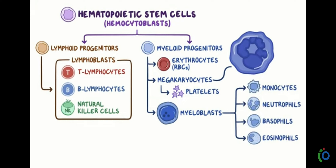Now we will discuss about the lymphoid progenitor. The lymphoid progenitor is related to the lymphatic system. In our body, various different systems carry different functions. The lymphatic system generates or forms a specialized system which is mainly related to immunity — it propagates and forms the immunity system.